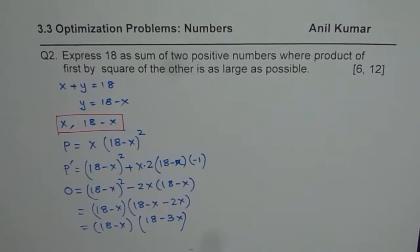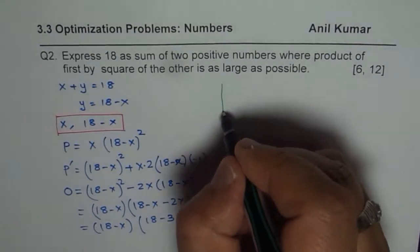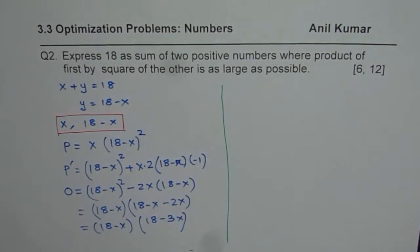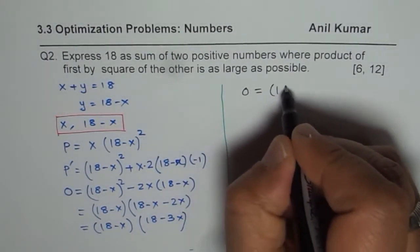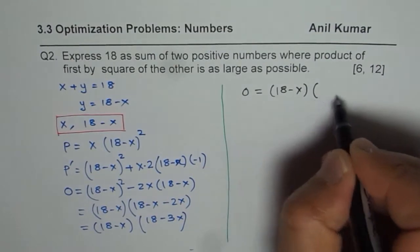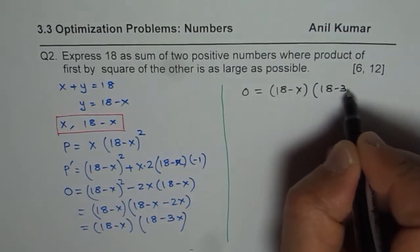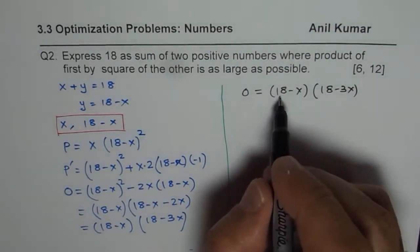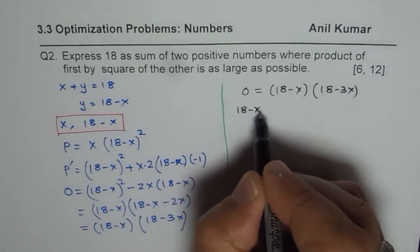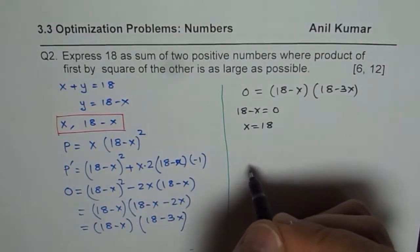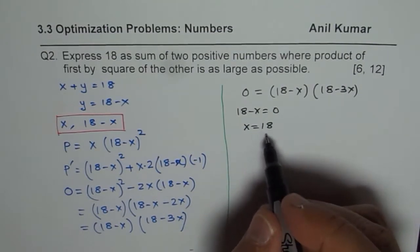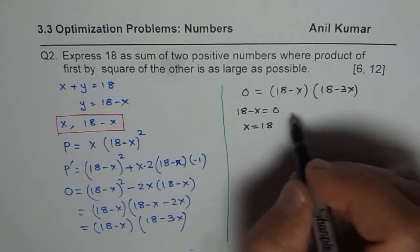So we have 0 equals 18 minus x times 18 minus 3x. If you equate 18 minus x equals 0 you get x equals 18. In that case the other number is 0. So that is one solution.